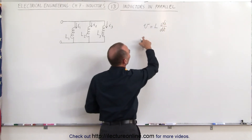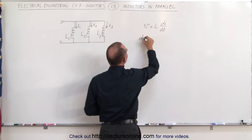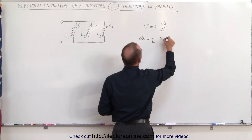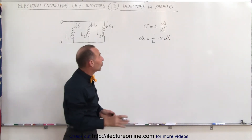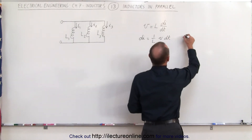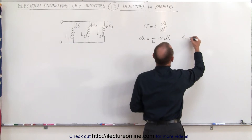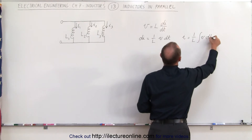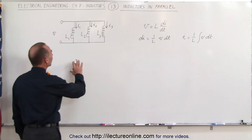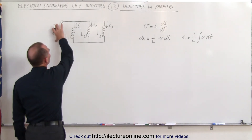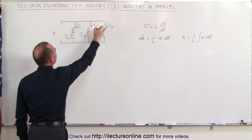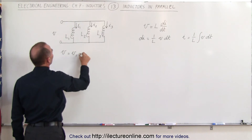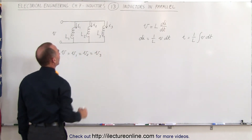If we then solve this for di, we can say that di is equal to 1 over L times V dt. And then if we integrate both sides of this equation, we can say that the current to any inductor is equal to 1 over the inductance times the integral of V dt. We can also say that the voltage across the terminals must be equal to the voltage across each of the inductors. So V is equal to V1, which is equal to V2, which is equal to V3.